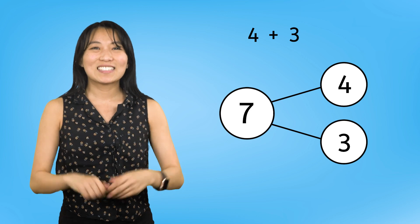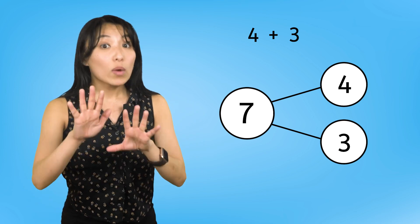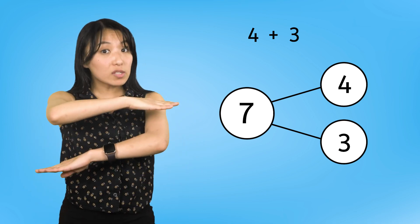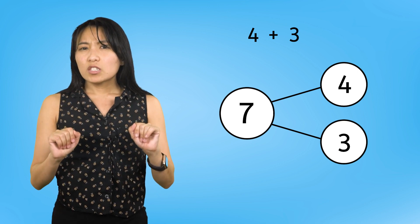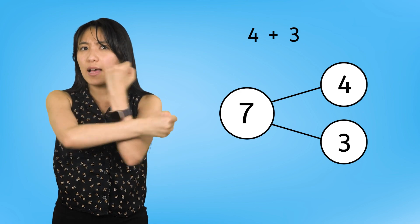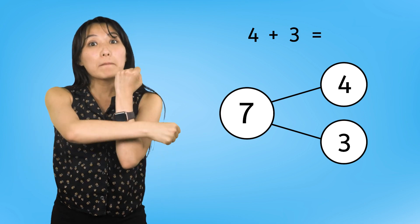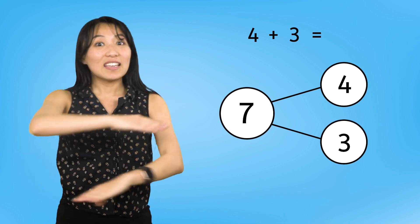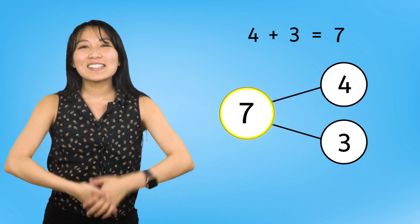Now the number sentence says four plus three, but we aren't done. We have to write in the equal sign and the whole, which is seven. The equal sign comes after four plus three — four plus three equals seven. Our number sentence is complete.